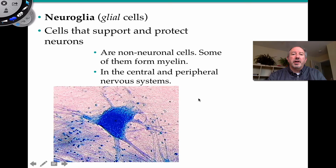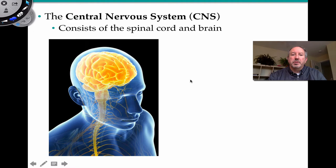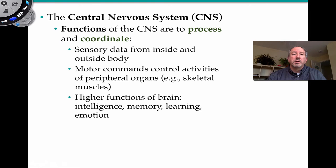Glial cells are found in both the central and peripheral nervous systems. The central nervous system and peripheral nervous system combined make up the two anatomical divisions of our nervous system. The central nervous system is composed of the brain and spinal cord. Anything that is not the brain and spinal cord is the peripheral nervous system.